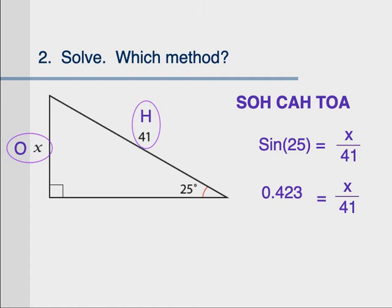You type sine 25 in your calculator. Make sure your calculator is in degrees mode. Put that over 1 so you can cross multiply. If you got roughly 17.3, well done.